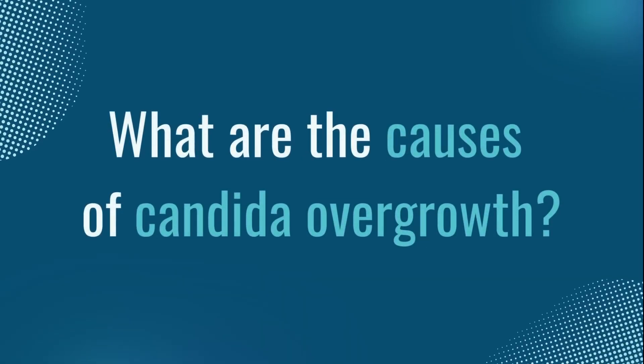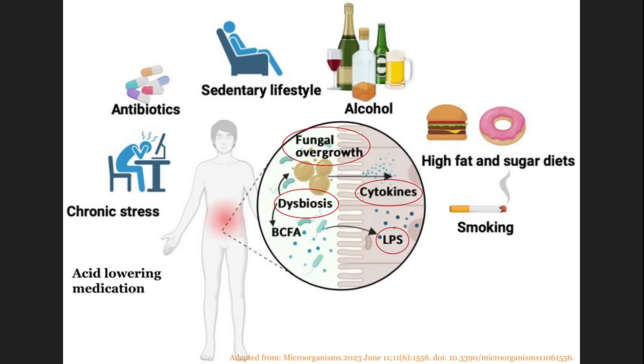What are the causes of candida overgrowth? We want to pay attention to what causes this situation so we can be proactive and preventative. Acid-lowering medication can be a predisposing factor for candida, because you need acidic stomach contents to kill off bacteria and fungus and prevent them from seeding and overgrowing down the rest of the intestinal tract.